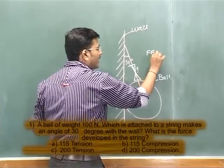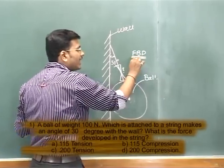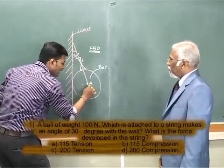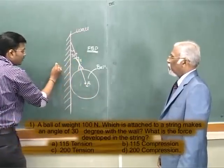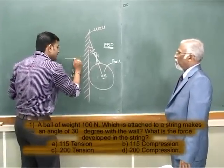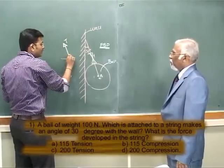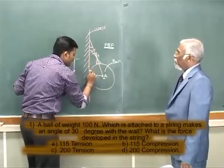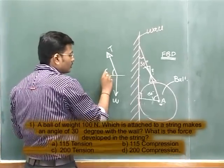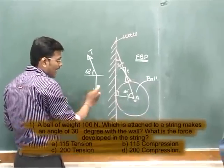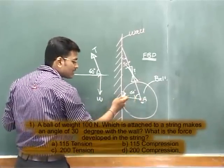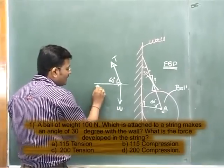We have to draw a Free Body Diagram (FBD) of this ball — a diagram which shows all forces acting at a point. The forces acting are: first, the weight component acting in the downward direction; second, the tensile force T, which makes 60 degrees with the horizontal (since 30 + 60 + 90 = 180); and third, the reaction force R developed at the point where the ball contacts the wall.